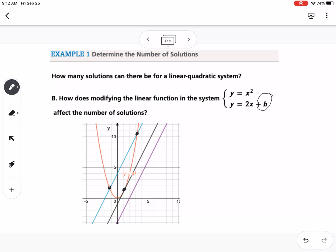And then you can see the purple line doesn't intersect with the parabola at all. So if we made our b value negative four, we would not have a solution so we'd have no solution.